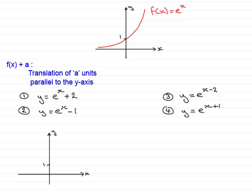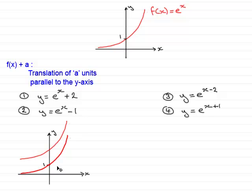Let me show you this. If we draw the axes and the graph of e to the x, then taking that graph and sliding it 2 units up parallel to the y axis gives us the graph of y equals e to the x plus 2. And if we take the e to the x graph and slide it down 1 unit, we get the graph of y equals e to the x minus 1. These are just translations of the basic graph f of x equals e to the x.